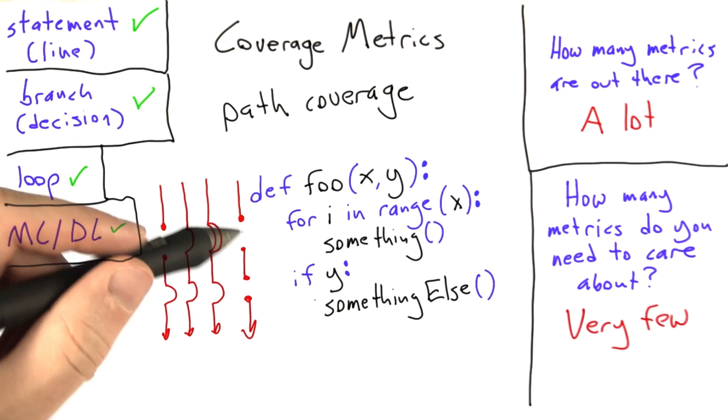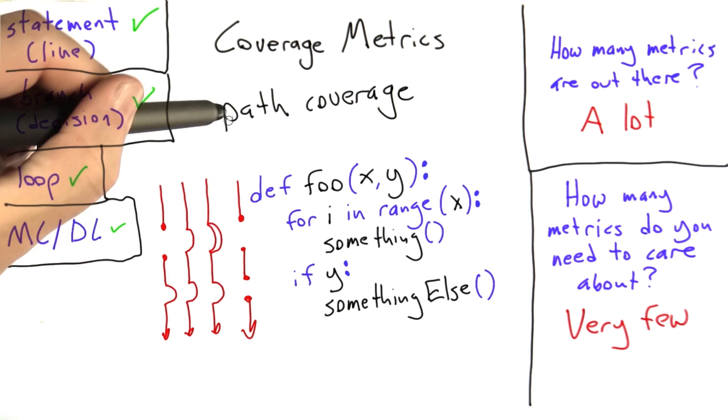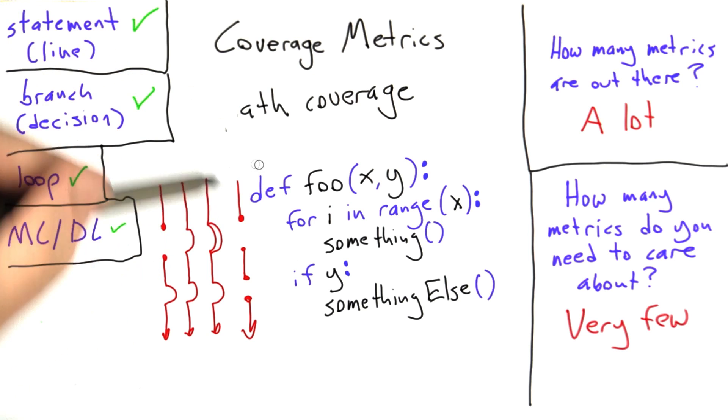And so path coverage is basically an ideal that we'd like to approach if we want to do a good job testing, it's not going to be something that we can actually achieve.